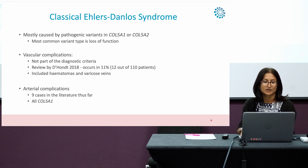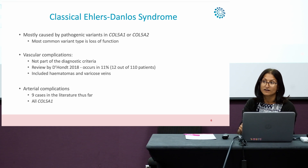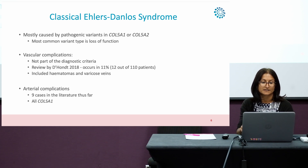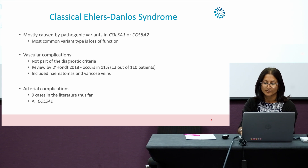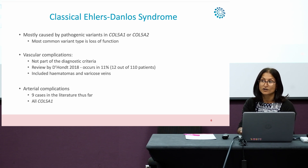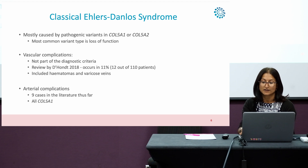However, that figure included haematomas and varicose veins. If you look specifically at arterial complications, there are nine cases that have been published in the literature so far. Interestingly, these are all Col5A1 pathogenic variants — none in Col5A2.